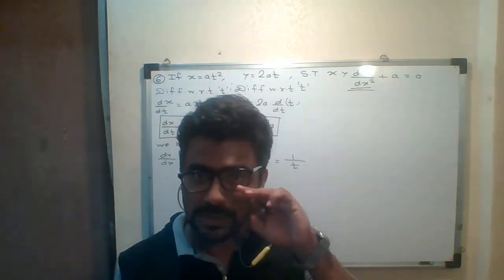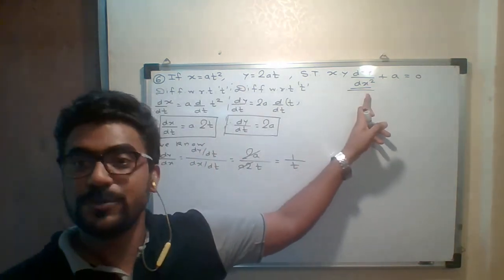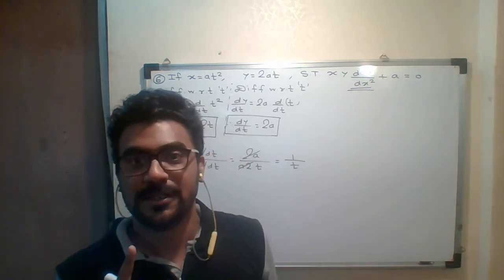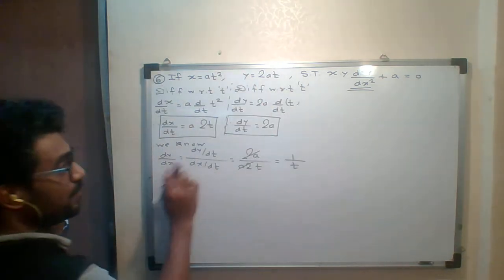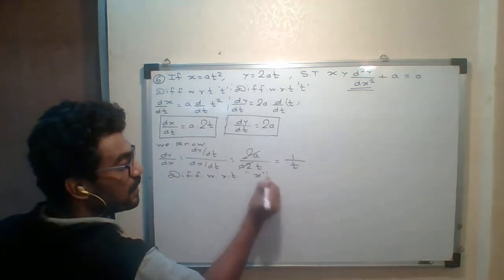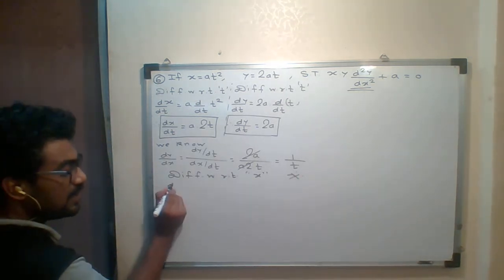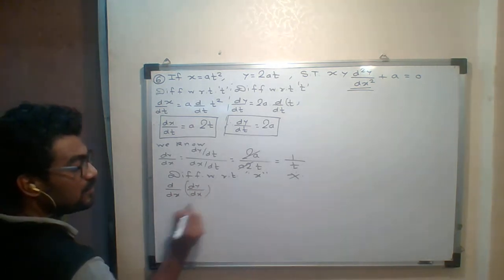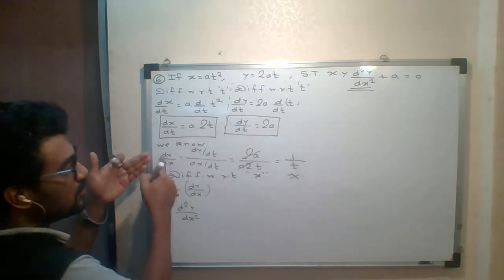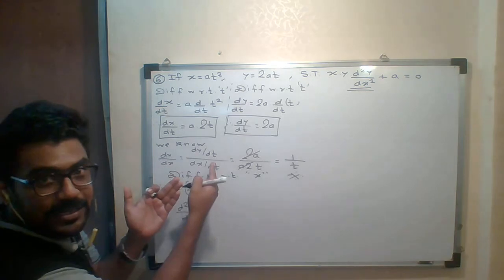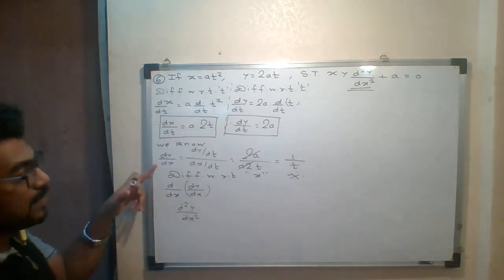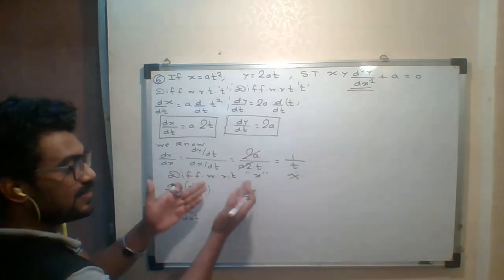Now I am going to find d²y/dx². For that I have to differentiate one more time — not with respect to t, but with respect to x, because we need d²y/dx². This is a very important step. We differentiate dy/dx with respect to x to get d²y/dx². That is why I first differentiated with respect to t using the formula dy/dx = dy/dt ÷ dx/dt, and now I differentiate with respect to x.